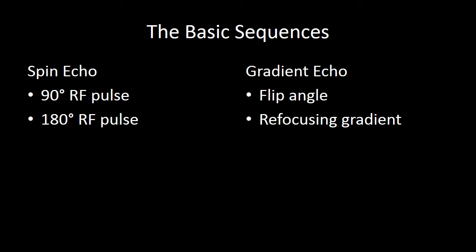The two basic sequences are spin echo and gradient echo. With spin echo, we generate transverse magnetization using a 90-degree pulse, and then we refocus our echo using a 180-degree pulse. Gradient echo is slightly different in that it uses a variable flip angle less than 90 degrees, and instead of using a 180-degree pulse, you use gradient switching to generate your echo.